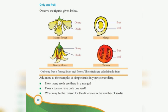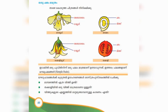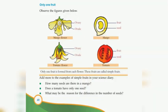The seed comes from the ovule of the ovary. We use the ovary in fertilization — the ovule is the part of the flower that develops into a seed, and the ovary develops into the fruit.